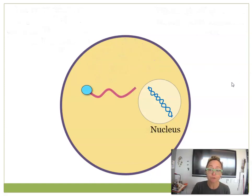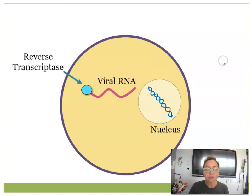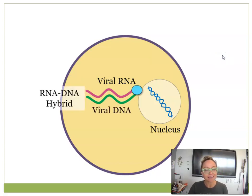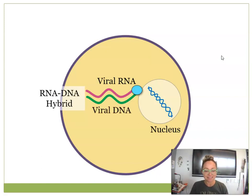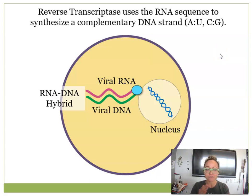Reverse transcriptase uses the viral RNA sequence to synthesize a single strand of DNA, following base pairing rules: an A in RNA corresponds to a T in DNA, and a U in RNA corresponds to an A in DNA. This builds a single strand of viral DNA.